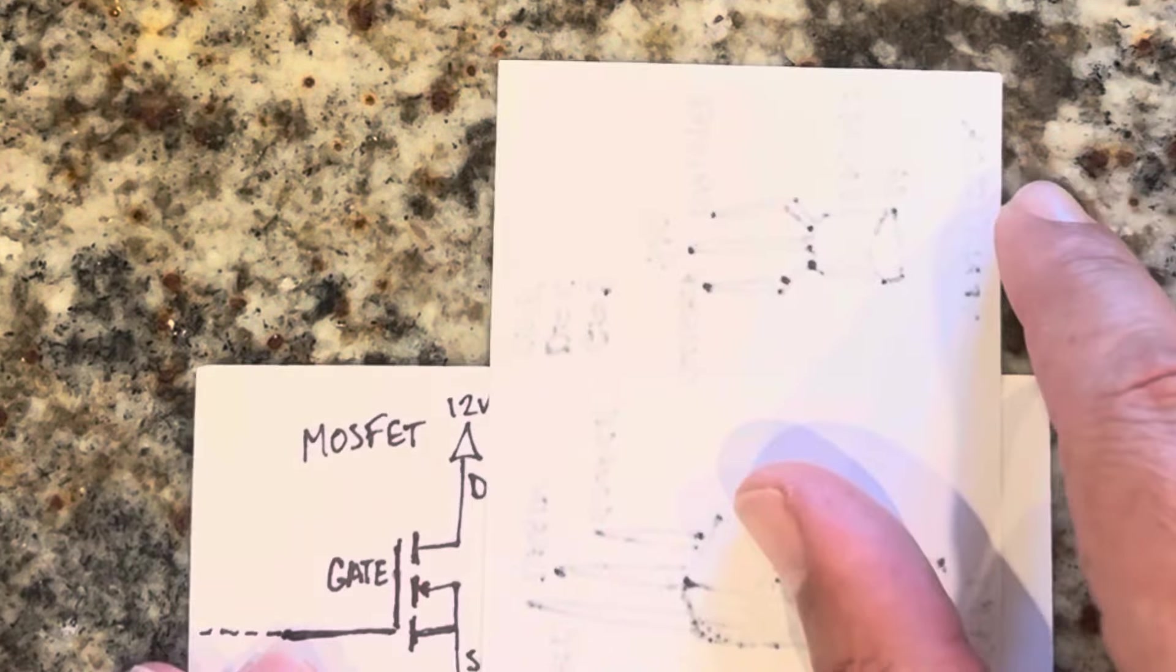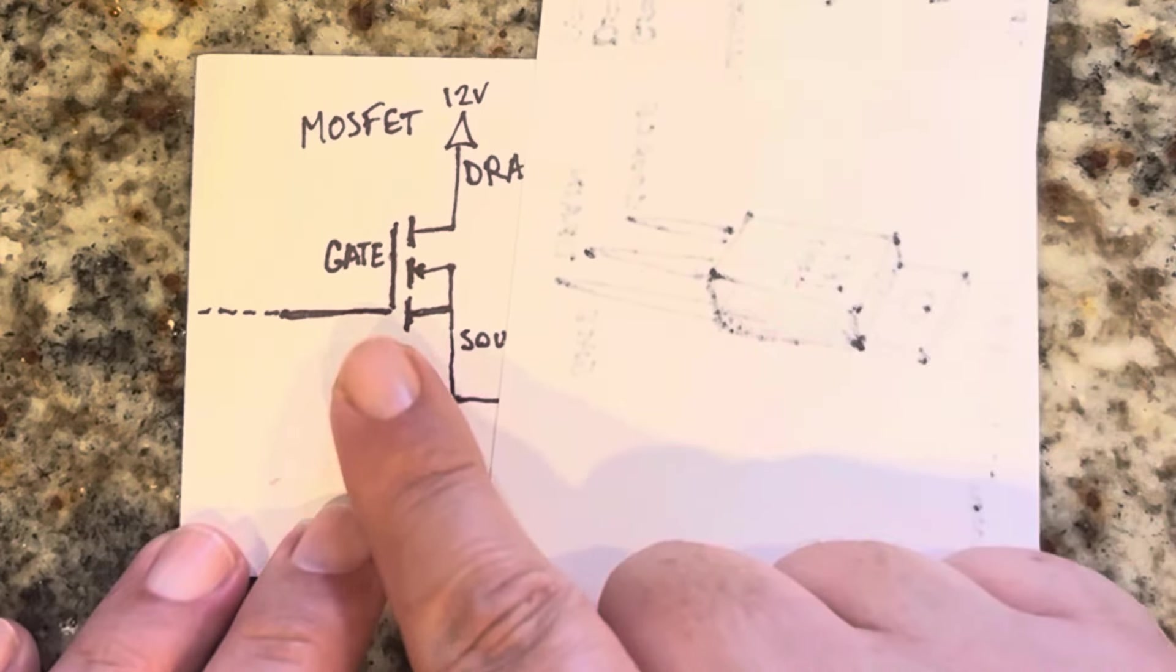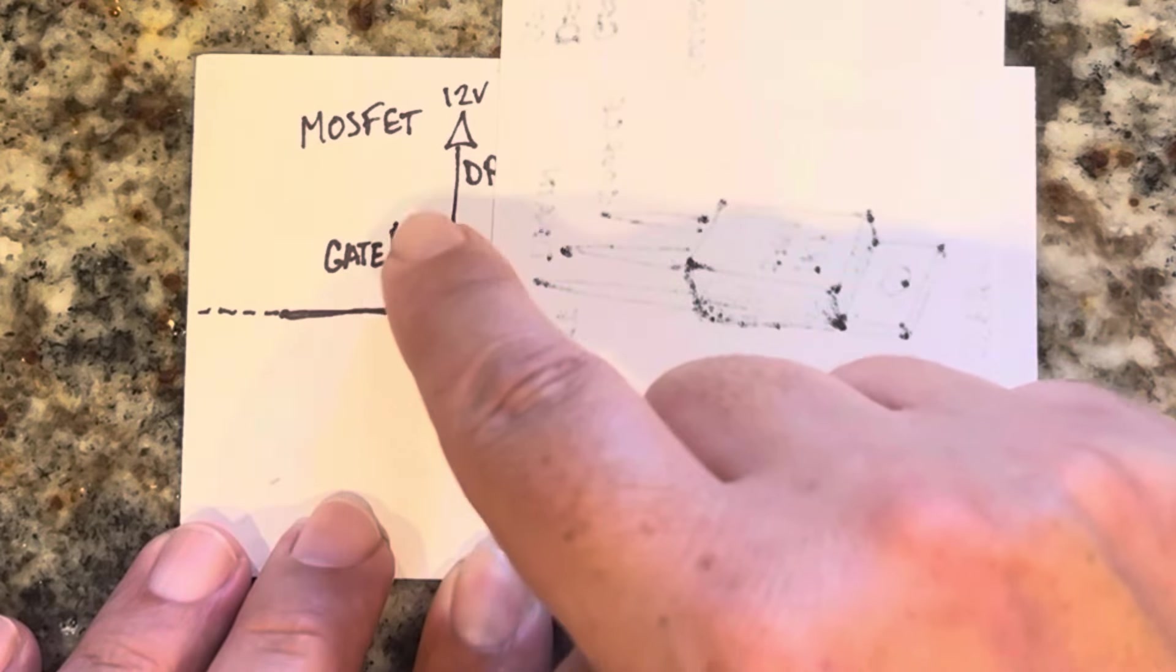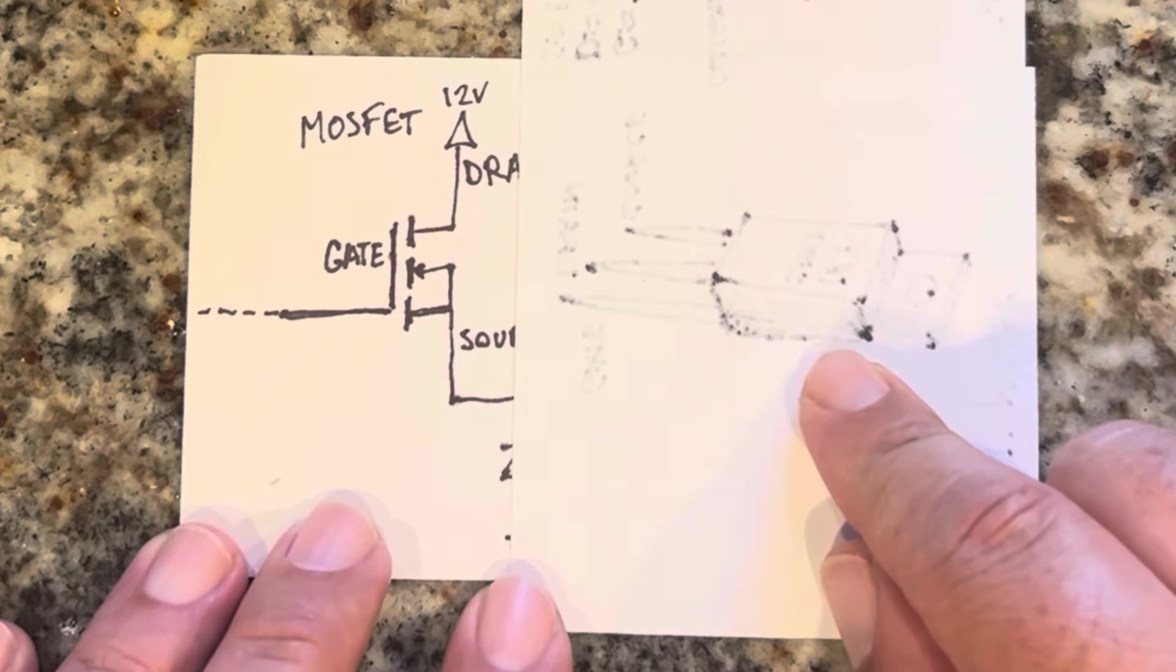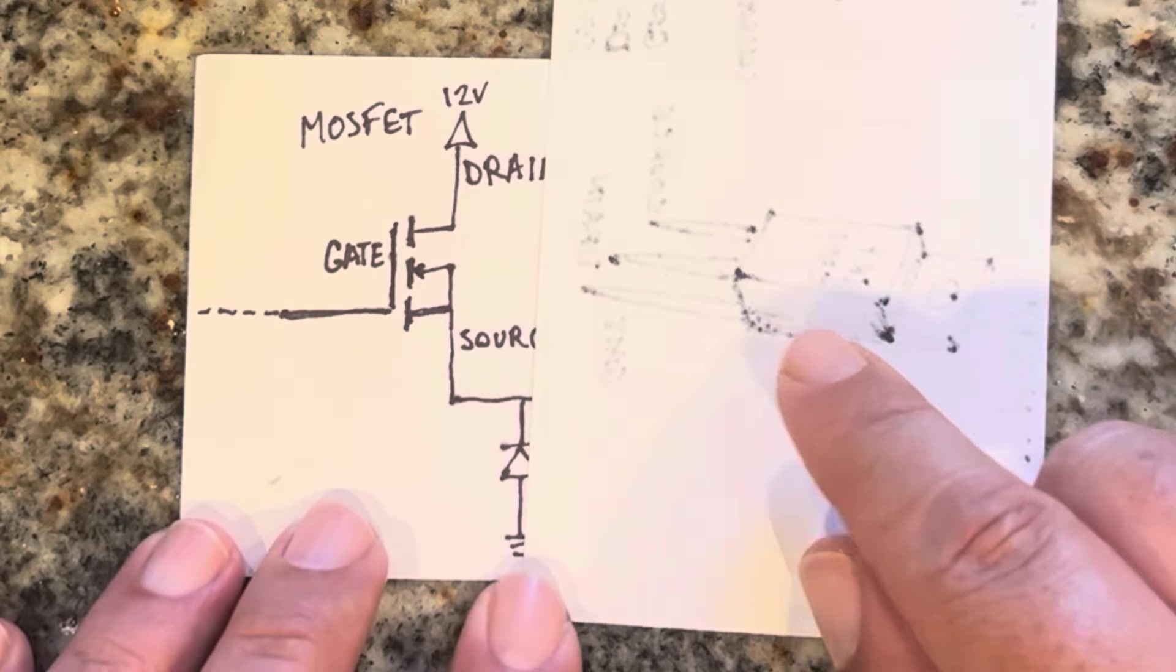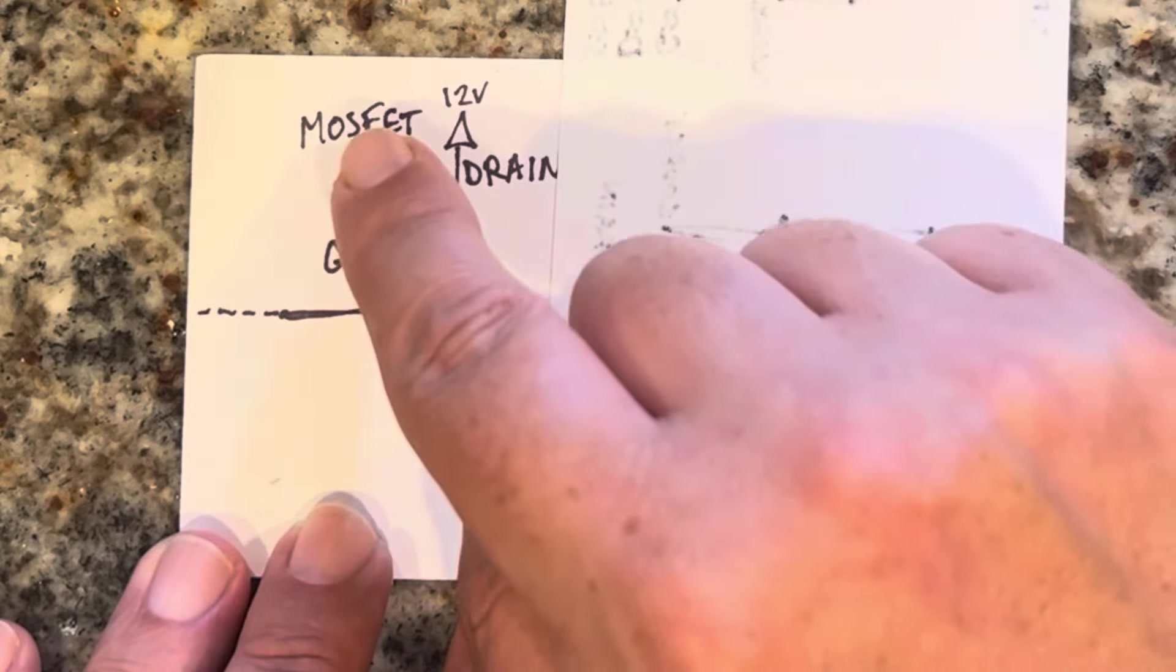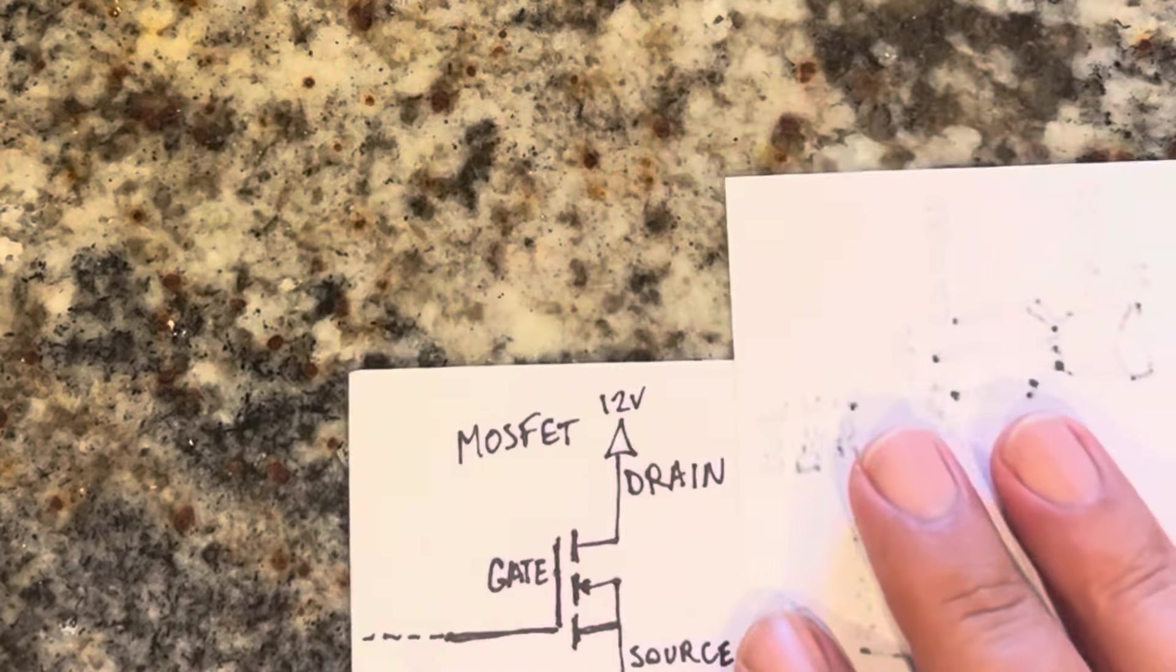The symbol for a MOSFET looks kind of like this, and where the gate goes in, the two ends are not actually touching. It's a field effect transistor. MOSFET stands for Metal Oxide Semiconductor Field Effect Transistor. So that's how it works.